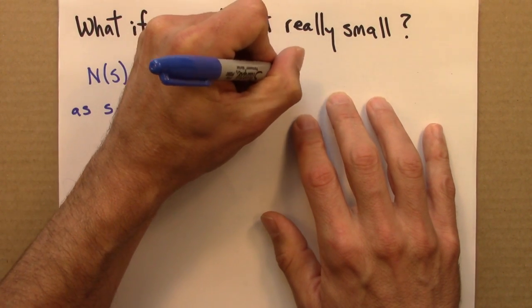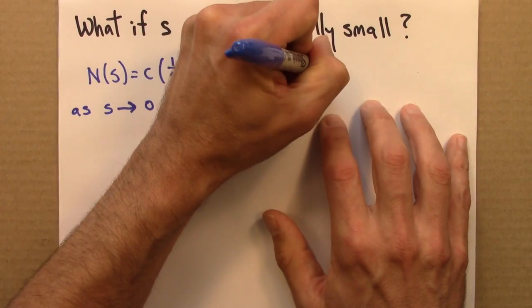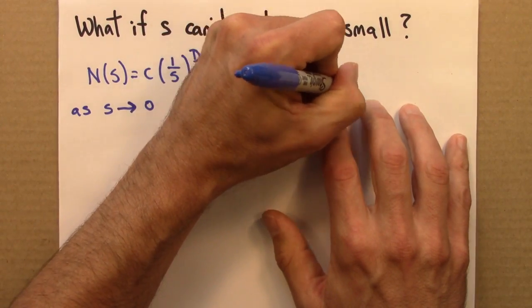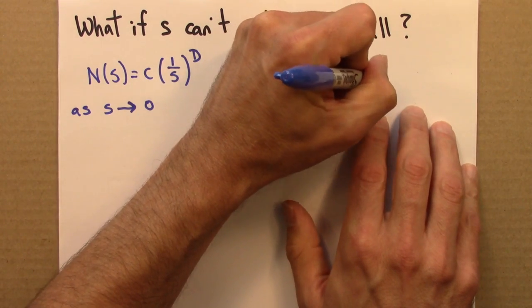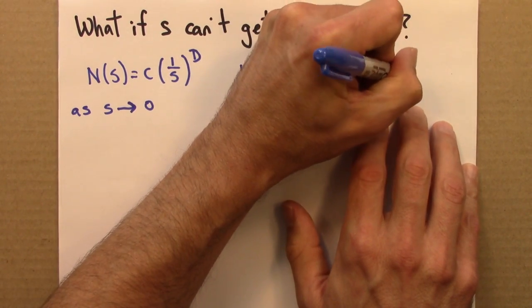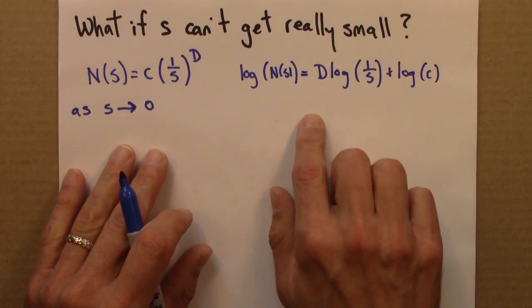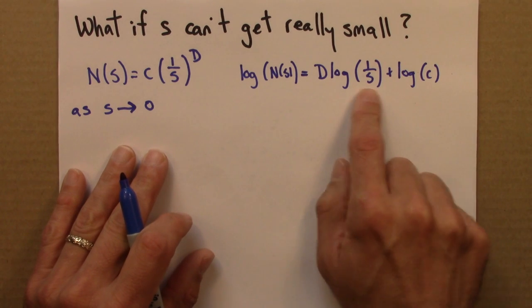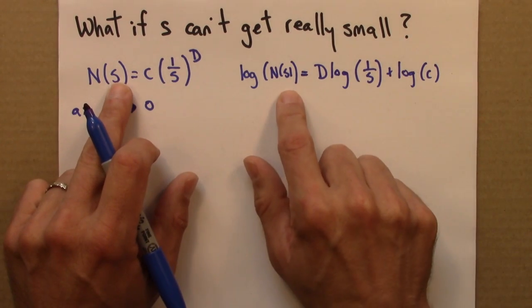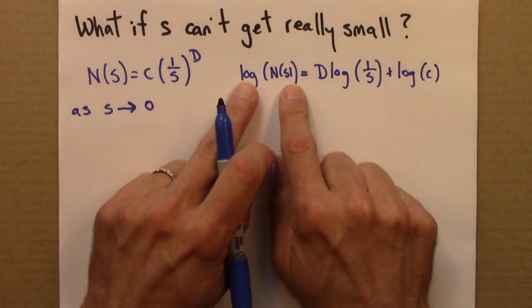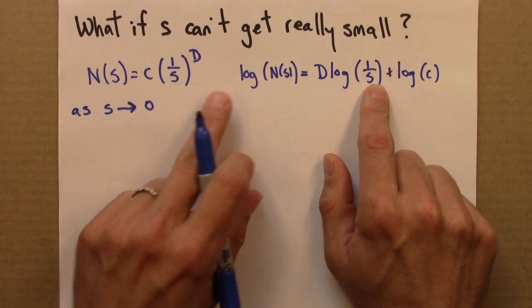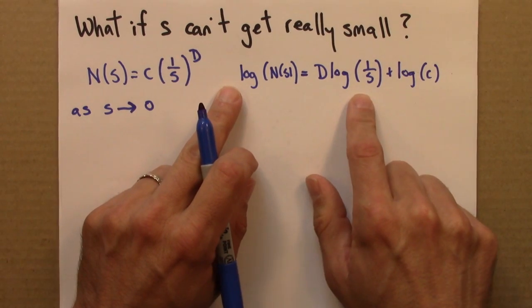log N(s) equals D log 1 over s plus log c. I went through the steps, the algebraic steps, to get from here to here in one of the previous videos, so there's no need to do it again. You can go back and look in that video if you want.